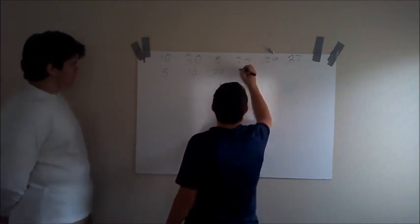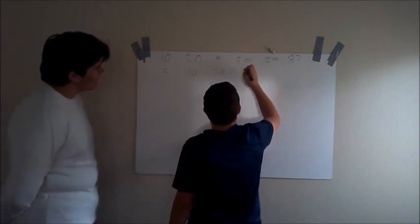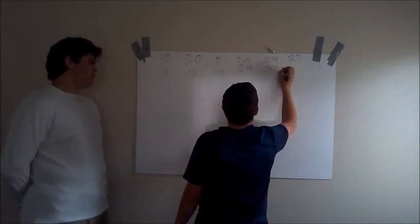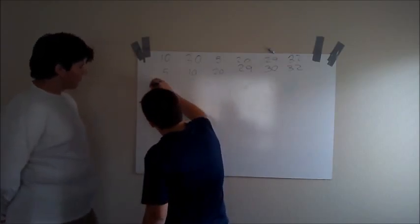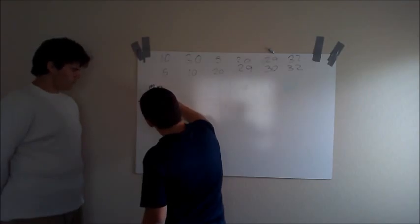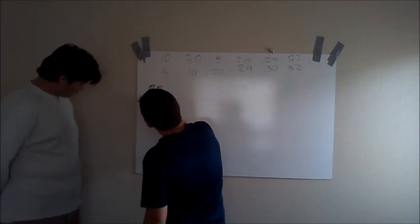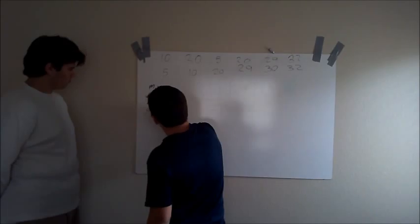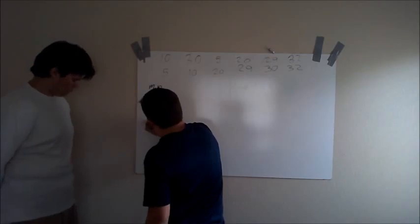And then 29. Oh wait, no — it's 29. And 30. Then 32. So, what you need to do is find the minimum number, the first quartile, and then the median. Then you need to find the third quartile, then you need to find the max number.